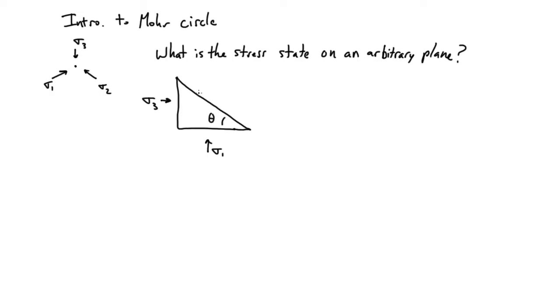We're going to take some arbitrary surface here which we're going to define by the angle theta. This surface is not oriented perpendicular to these principal stresses, so it's going to be feeling a normal stress and at least one shear stress in the two-dimensional plane of the paper.